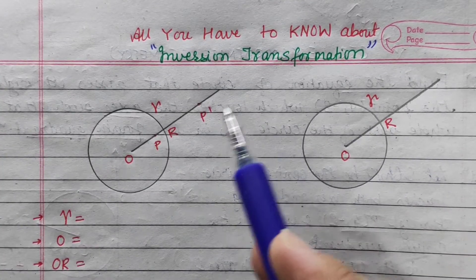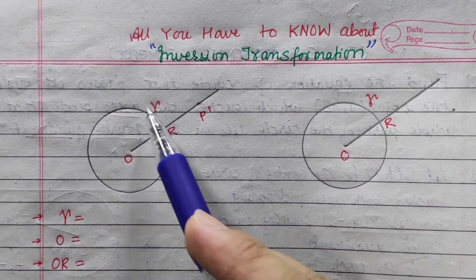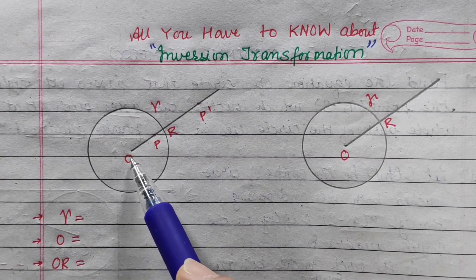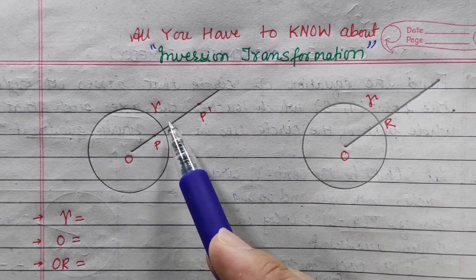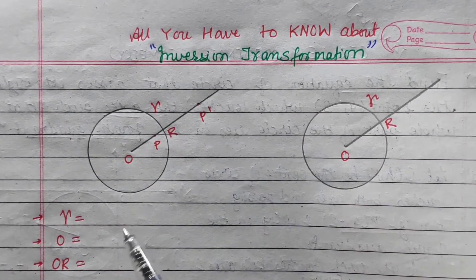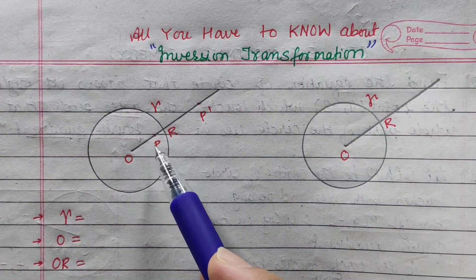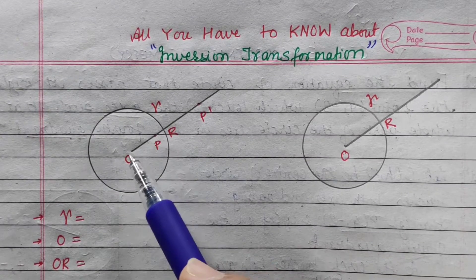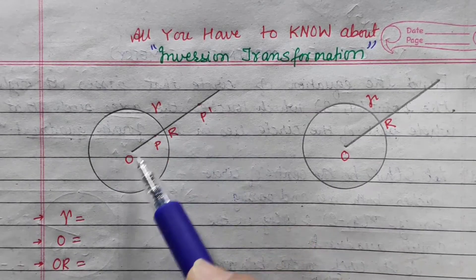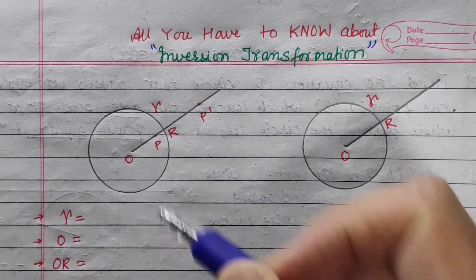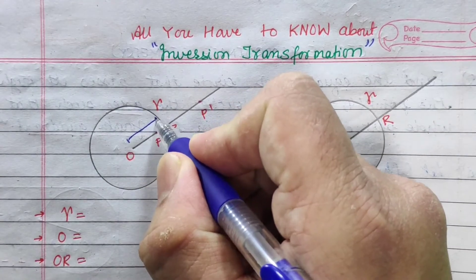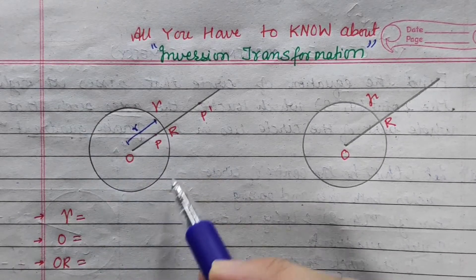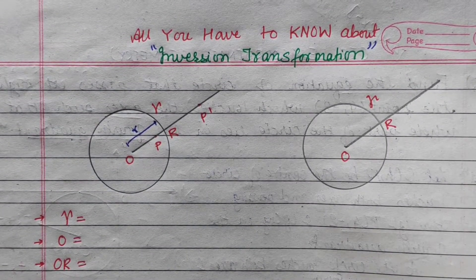Now, let me show the circle. Here is the center of inversion, and this is the radius of inversion. What does inversion transformation mean? Suppose you are point P. The circle is in the middle. OP and OP' multiply — this is R squared. This is the radius R. This is the circle of inversion, called gamma.